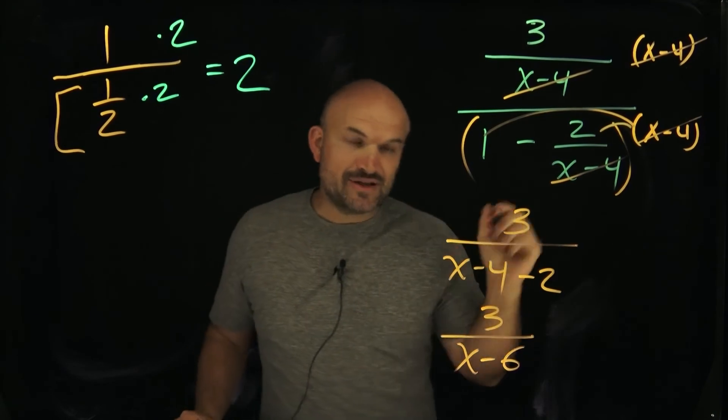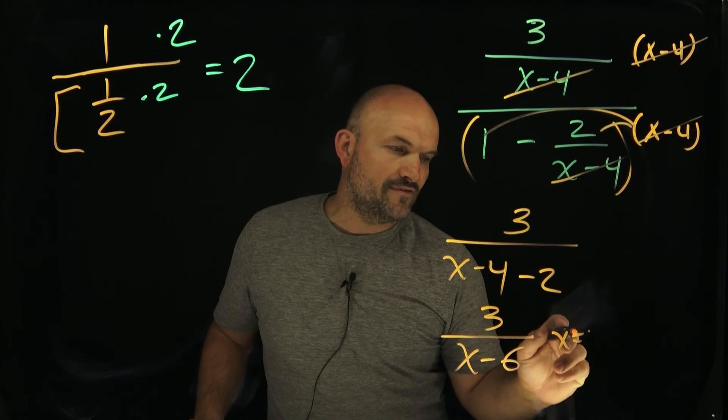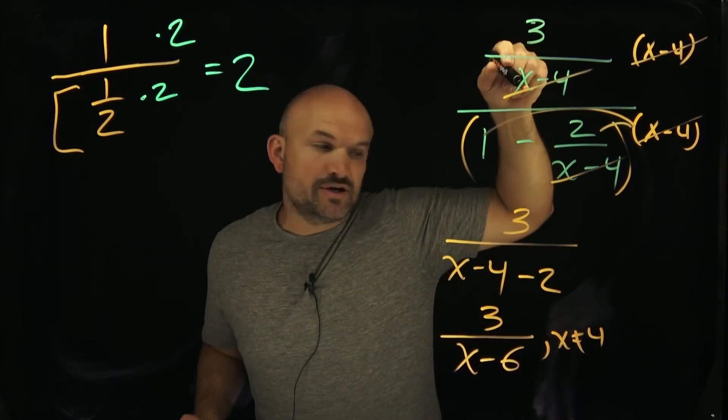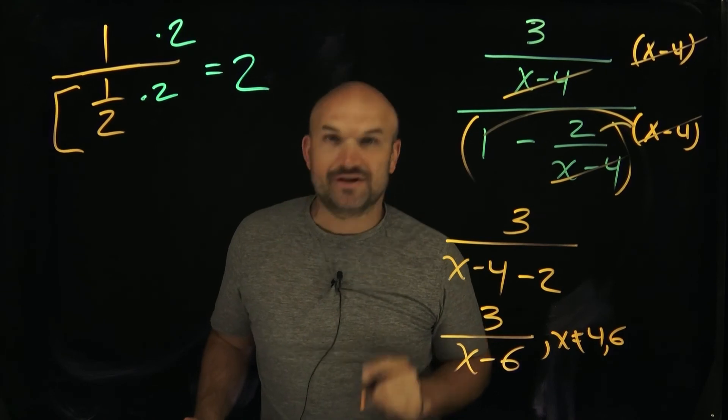If I want to be a little bit extra special, I can write the restricted values. I know that 4 cannot be in the denominator or x cannot equal a 4 because that would make my denominator 0 over here as well as x cannot equal a 6 because that would make my final simplified answer a 0 as well.